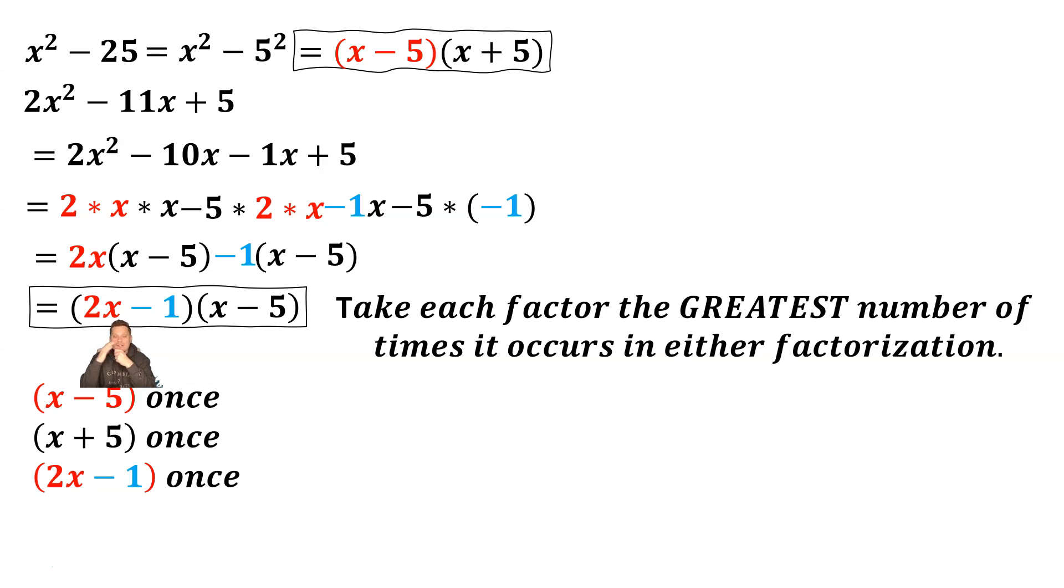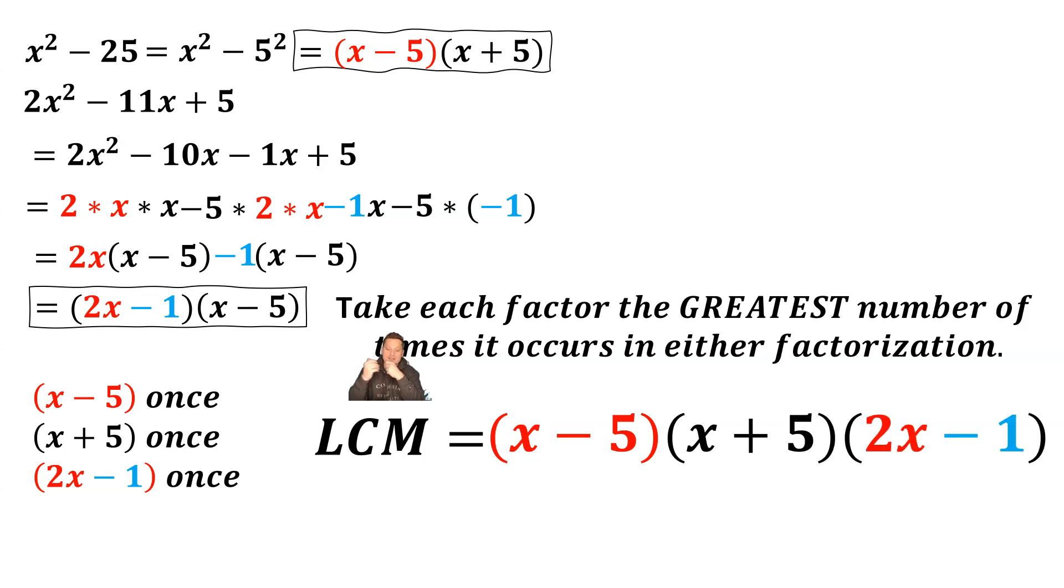So you've identified those factors. And now to form the LCM, just multiply them together. The LCM is simply the product of all of these. So it's x minus 5 times x plus 5 times 2x minus 1, just the way you see it here.